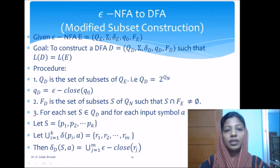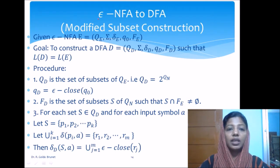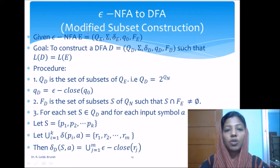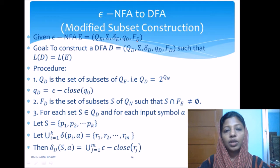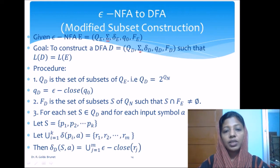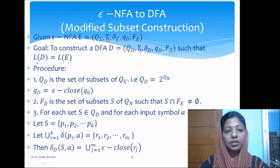To establish the equivalence between the epsilon-NFA and DFA, we design a procedure called modified subset construction that converts the epsilon-NFA to a DFA. The given input is epsilon-NFA with 5-tuples QE, Sigma, DeltaE, Q0, and FE. Our goal is to construct the DFA with 5-tuples QD, Sigma, DeltaD, and FD such that the language of the DFA equals the language of the epsilon-NFA.